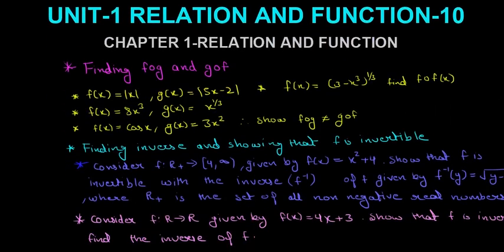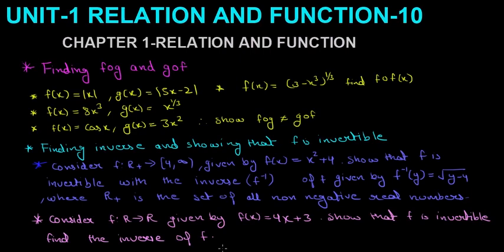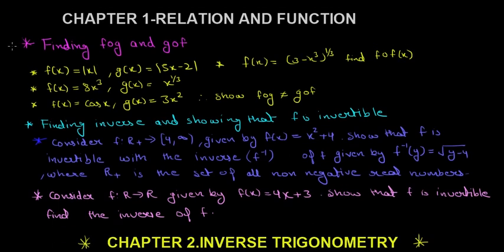The first unit is Relations and Functions. Unit 1 Relations and Functions has 10 marks weightage — the questions from it come for 10 marks in board exams. Taking a total of 100 marks as reference, you can also take 85 marks depending on your board, but this is the average weightage. In the unit Relations and Functions, the first chapter is Relations and Functions itself, and these are the types of questions they ask — only these types of questions are really important.